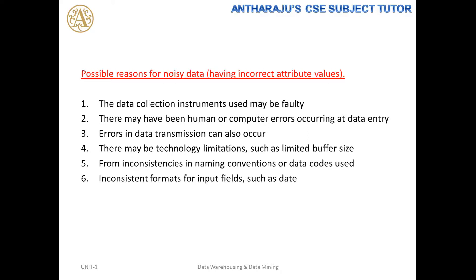Coming to noisy data — why does it occur? The data collection instrument may be faulty. For example, if a thermometer is not working properly, it may show 130 or 140 degrees for body temperature due to instrument malfunction. Second, there may be human or computer errors occurring during data entry. Third, errors in data transmission can occur when data is transferred from one location or branch to another, leading to data loss or errors. There may also be technological limitations such as limited buffer size.